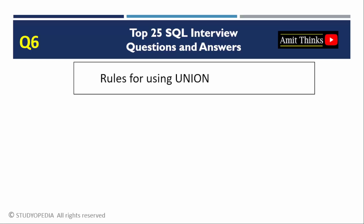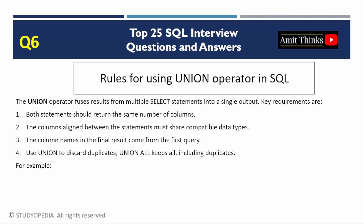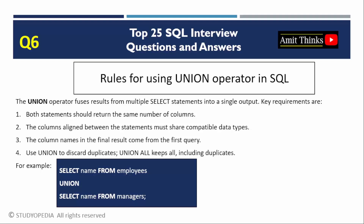Question 6: Rules for using the UNION operator in SQL. The UNION operator combines results from multiple SELECT queries into a single result set. The rules include: each query must have the same number of columns, corresponding columns must have compatible data types, column names are taken from the first query, and UNION removes duplicates. UNION ALL is faster as it skips duplicate checks. Use UNION for distinct records and ensure column alignment.